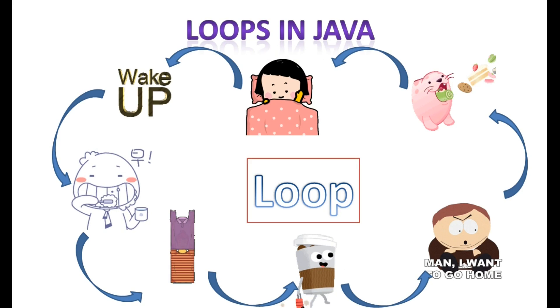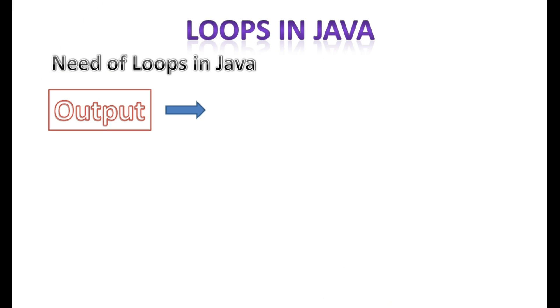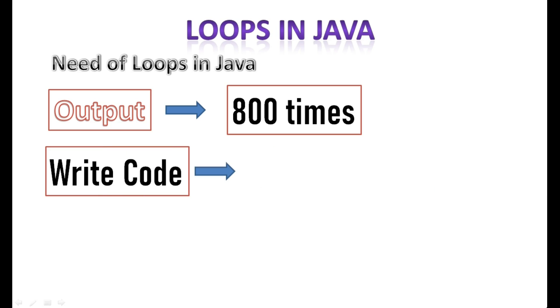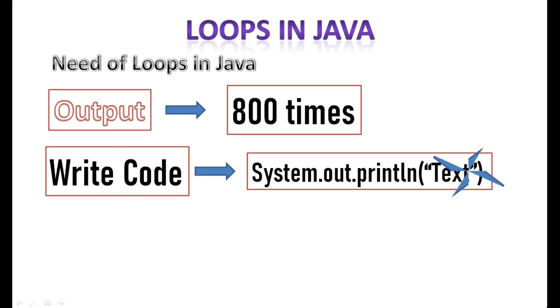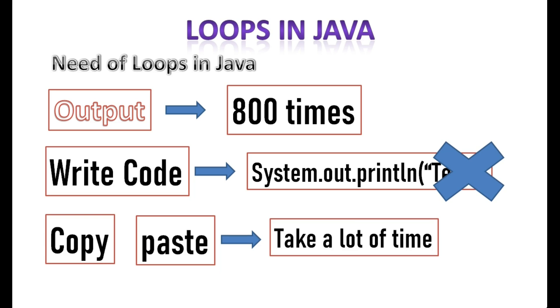Now come to the next, why we need loops in Java. Imagine a program which is required to output a particular value of a variable 800 times. Now we all know that the code for writing output is system.out.println text. But in order to print this 800 times, we will need to write the same line 800 times in the code. That would take up a lot of effort, which is particularly just copy pasting the same sentence 800 times.